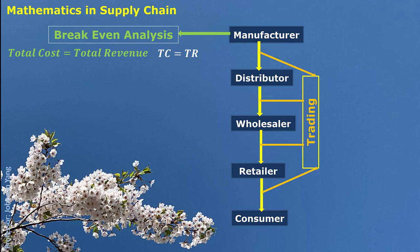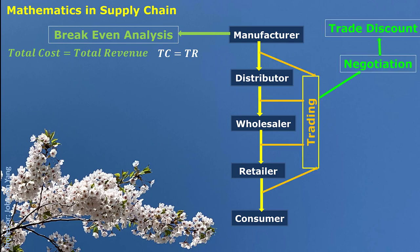Then, in the trading part, we will talk about the trade discount. This happens during the trading negotiation. The price listed by the seller is not the net price being settled at the end of the trading agreement. So the difference between list price and net price is what we call the trade discount.